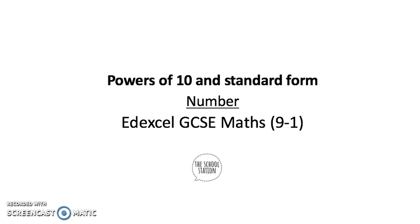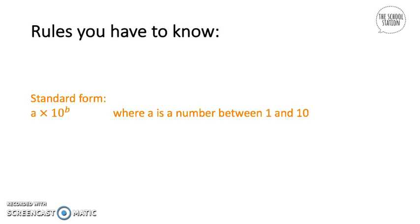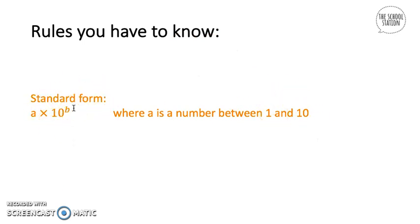Before we get started, I just wanted to go through the rule of standard form. Standard form is a times 10 to the power of b, where a is a number between 1 and 10. For example, 0.03 is not in standard form — standard form requires a number between 1 and 10 times 10 to the power of something. So we have to find the number where the decimal point can be placed after a digit between 1 and 10.